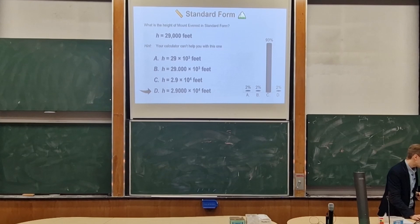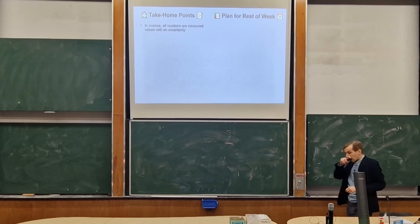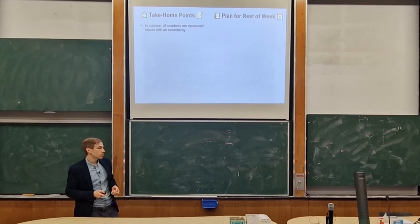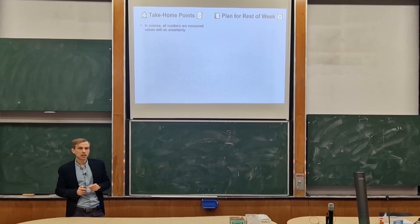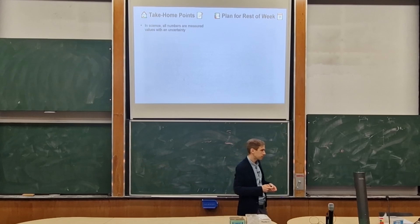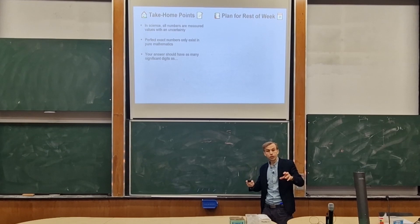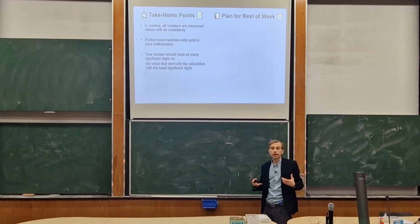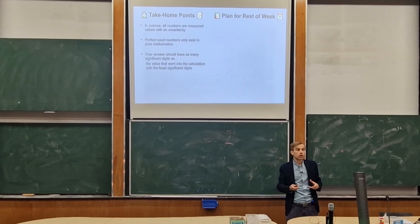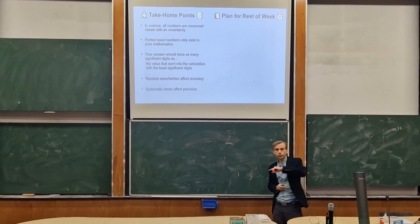We're coming up towards the hour, so we'll do accuracy and precision next time — that's going to be fine. The key take-home points for now: in science, all numbers are measured values, not perfect and exact numbers as in maths. Your answer should have as many significant digits as the number going into your calculation with the lowest number of significant digits. Any extra digits aren't just misleading — they're actually incorrect.